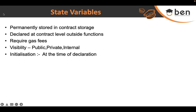State variables can be initialized in three different ways. First, at the time of declaration itself — you assign a value right when you declare the variable. Second, you can use a constructor. Constructors are functions which are called only once during contract creation, and you can assign values for state variables inside them.